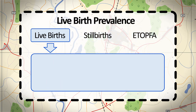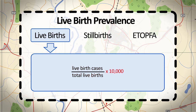To calculate the live birth prevalence, divide the number of live birth cases — the neonates affected with a birth defect — by the total number of live births, which include neonates with and without birth defects, then multiply by 10,000. Live birth cases in the numerator include cases with birth defects counted among the source population in a given year. The denominator is the number of total live births in the same source population during the same year. The prevalence of specific birth defects is usually expressed as neonates with a specific birth defect per 10,000 births.